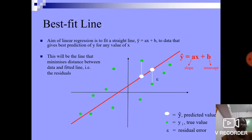Best fit line. Aim of linear regression is to fit a straight line, ŷ equals Ax plus B, to data that gives best prediction of y for any value of x. This will be the line that minimizes distances between data and fitted line, that is, the residuals.